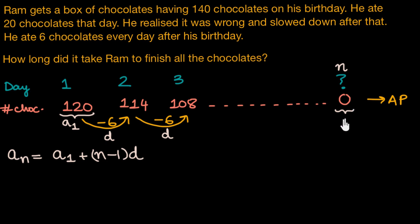So zero is our nth term, zero is AN in this case. So let's put all these values in our equation and find out how many days it took Ram to finish off all the chocolates. So the nth term is zero and this should be equal to the first term, which is 120 plus n minus one. n is the number of days that we need to figure out, and the common difference is negative six.